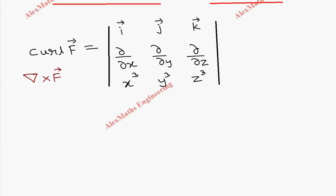Now I am going to expand this. The positive term will be i vector into ∂/∂y of z cube. When we do partial derivative of z cube with respect to y, it is 0, minus ∂/∂z of y cube.